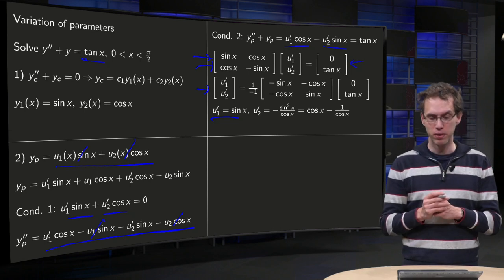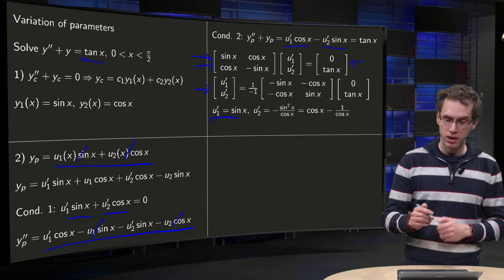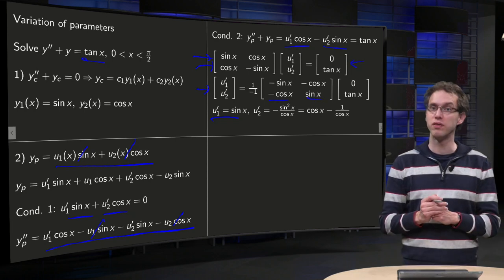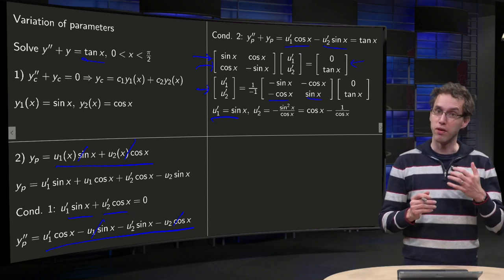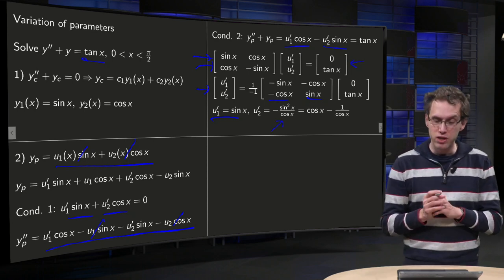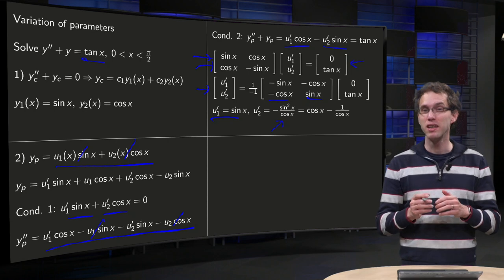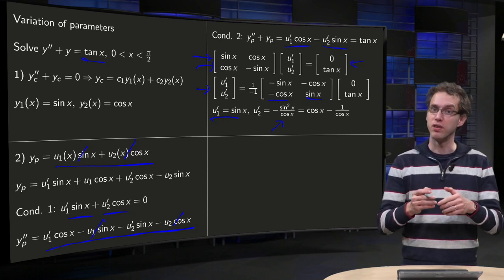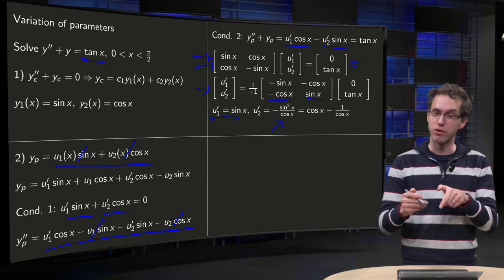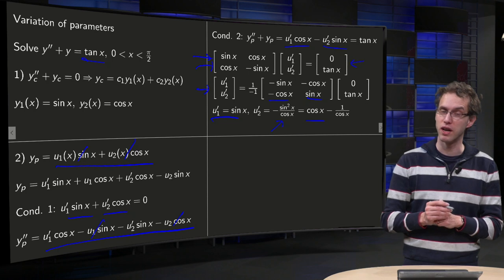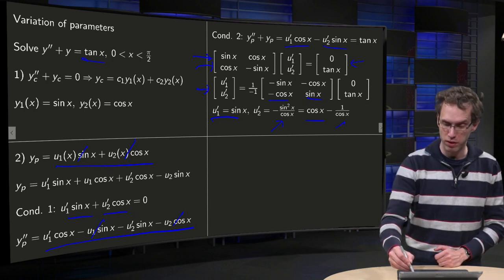u₂' becomes slightly more difficult. Then you get 0·(-cos) + sin·tan(x). So you have -sin(x) and sin²(x)/cos(x). You can simplify slightly because sin² = 1 - cos². So you are left with (cos² - 1)/cos. So cos²/cos = cos, but you still have this nasty 1/cos.